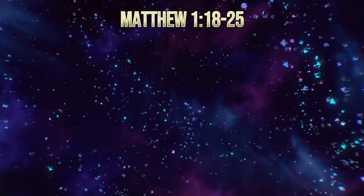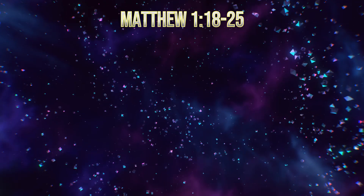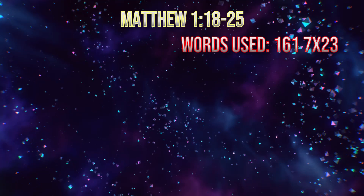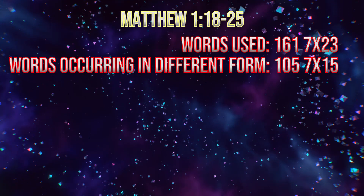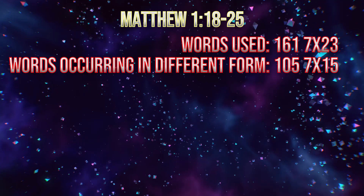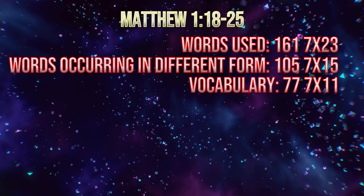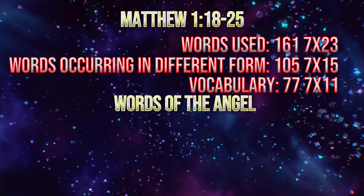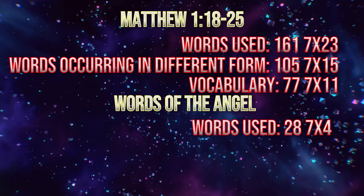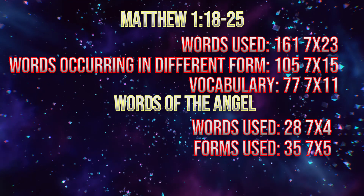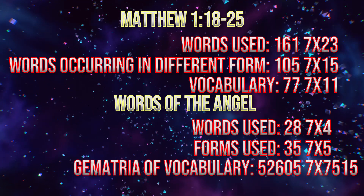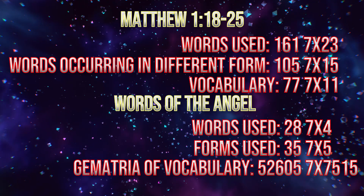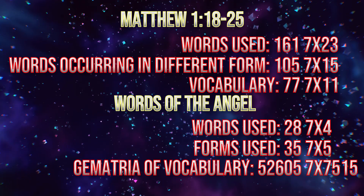Now let's take a look at Matthew chapter 1, verses 18 through 25. The words used are 161. Words occurring in different form are 105. The vocabulary used is 77. The words used by the angel are 28. The forms used are 35. And the gematria of the vocabulary is 52,605. All multiples of 7.